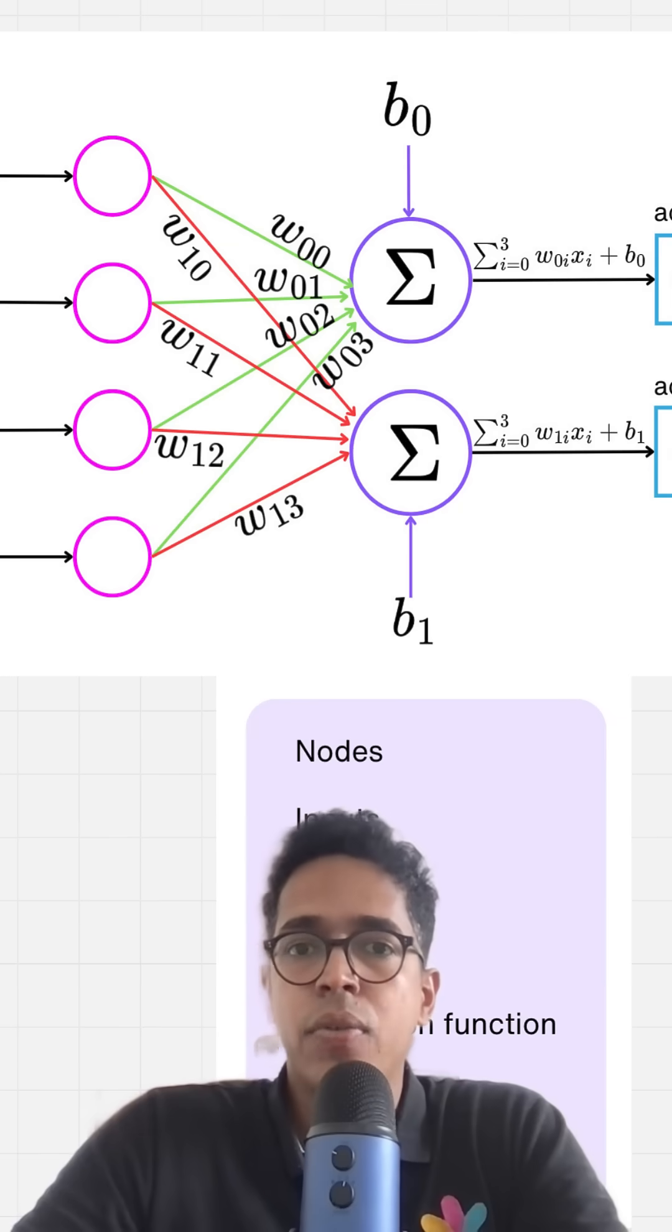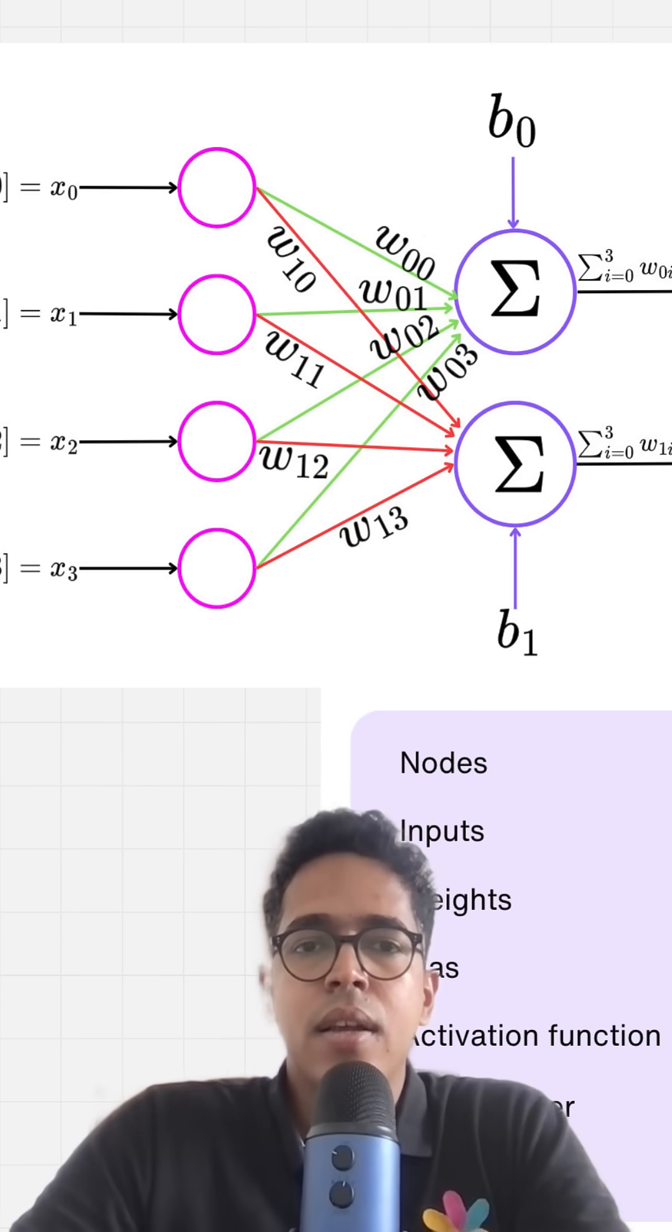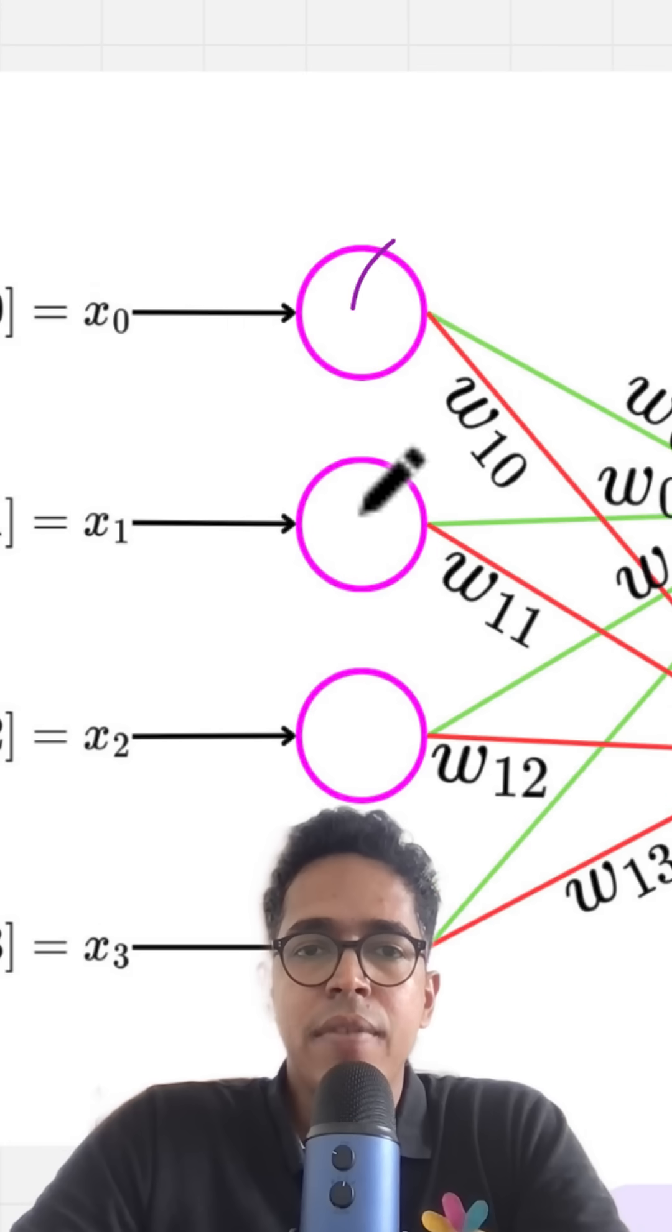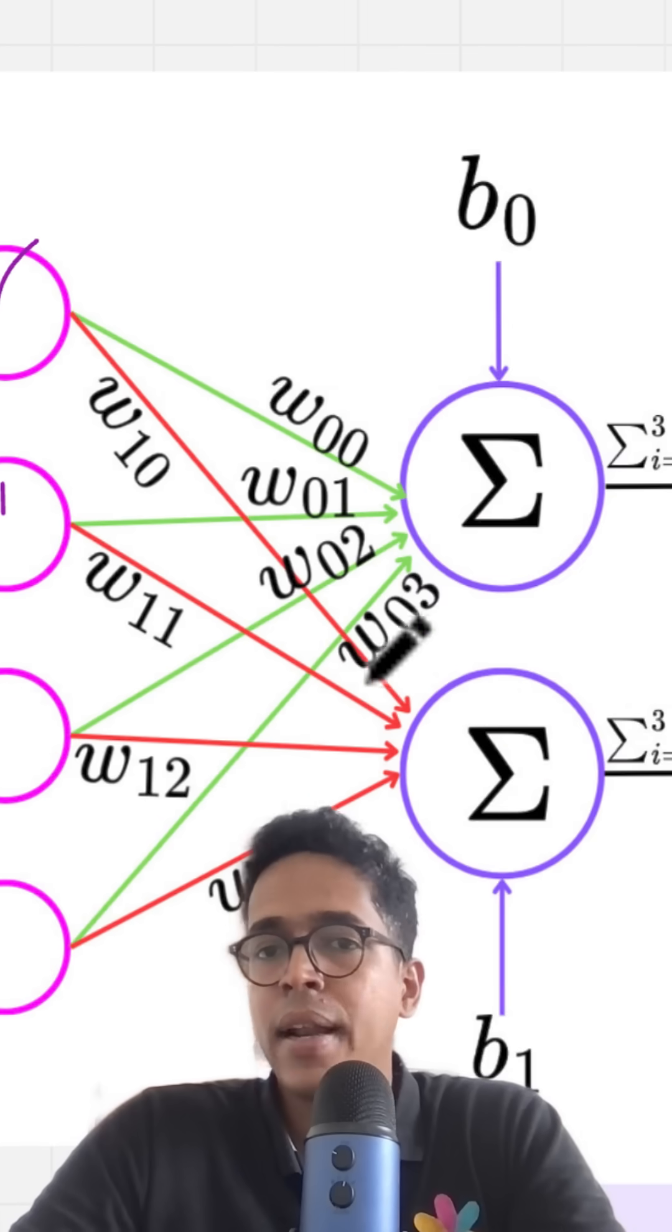Let's try to understand the structure of a neural network in 60 seconds. There are neurons, which are these individual units in input, hidden, and output layers.